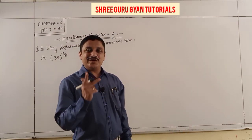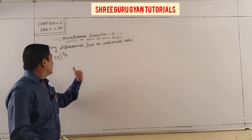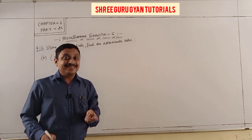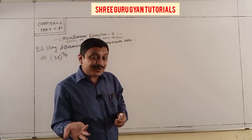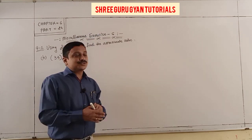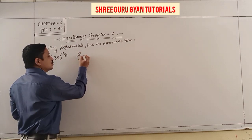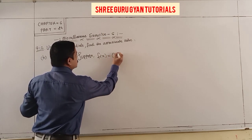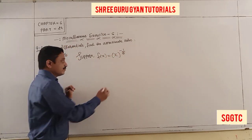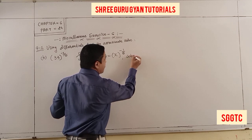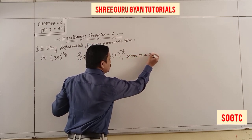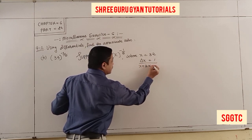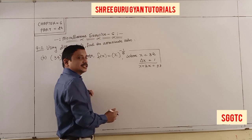Similarly, moving to the second one: find the approximate value of 33^(1/5). Since 33 is nearest to 32, and 2^5 = 32, we suppose f(x) = x^(1/5), where x = 32 and Δx = 1, so x + Δx = 33.